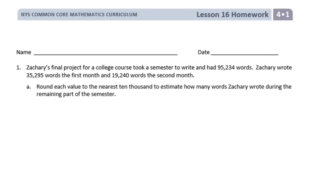Number one. Zachary's final project for a college course took a semester to write and had 95,234 words. Zachary wrote 35,295 words the first month and 19,240 words the second month. Round each value to the nearest 10,000 to estimate how many words Zachary wrote during the remaining part of the semester.